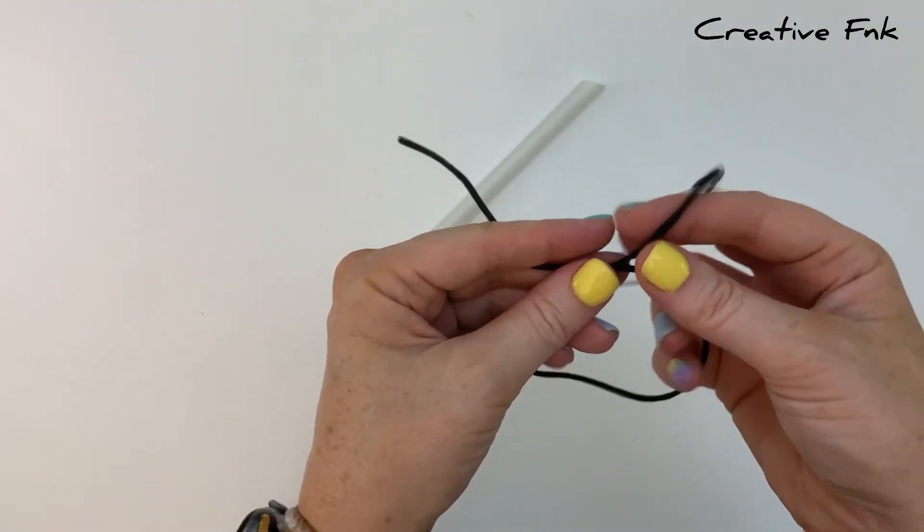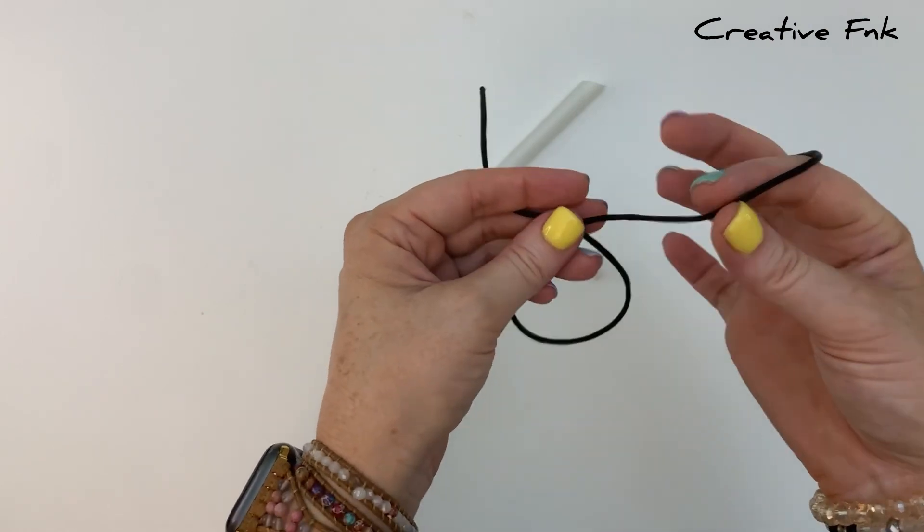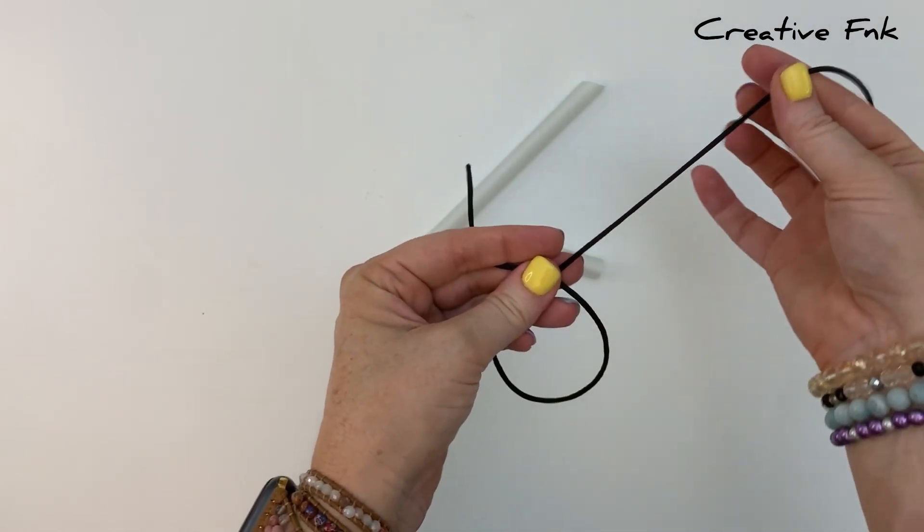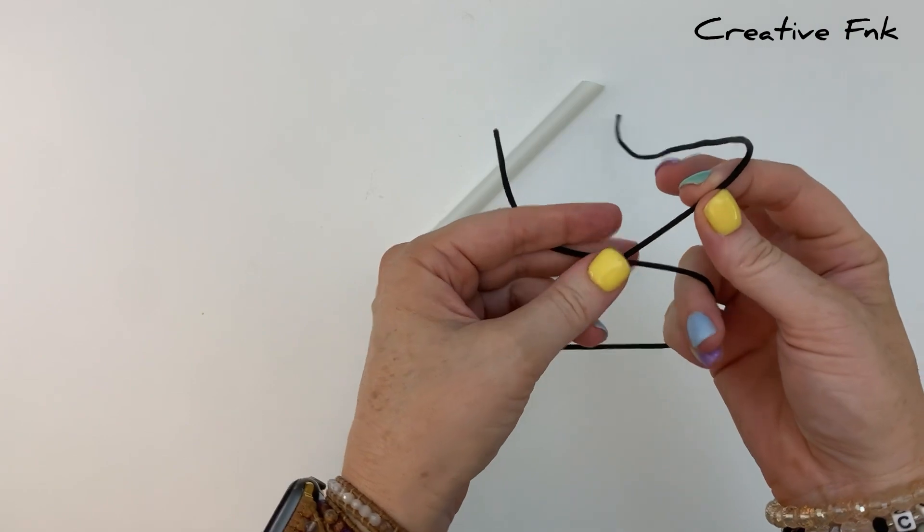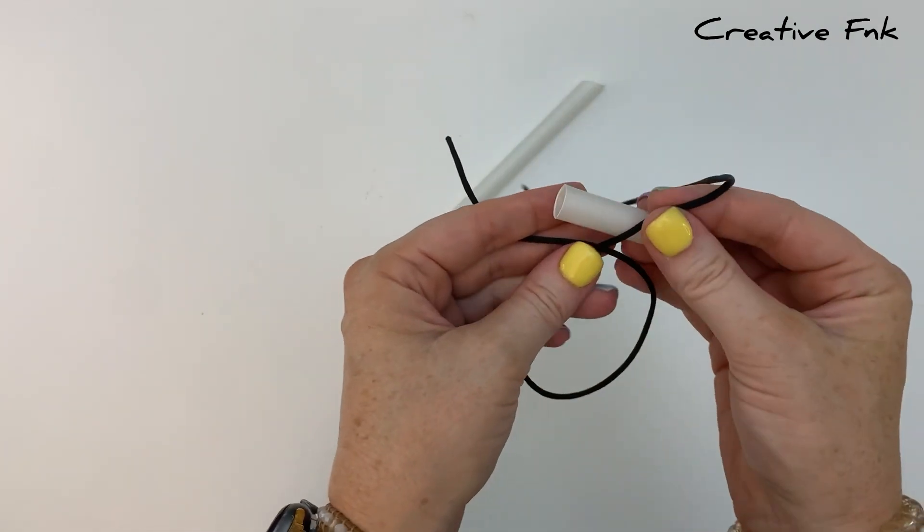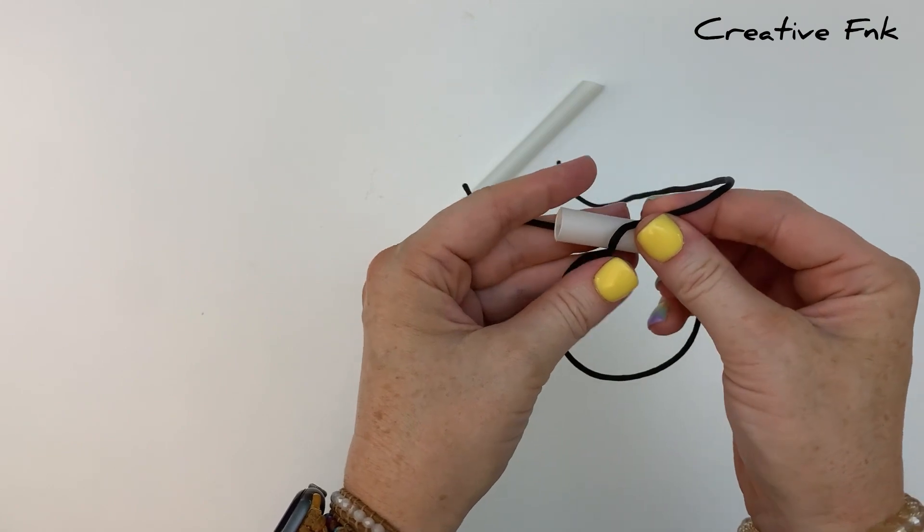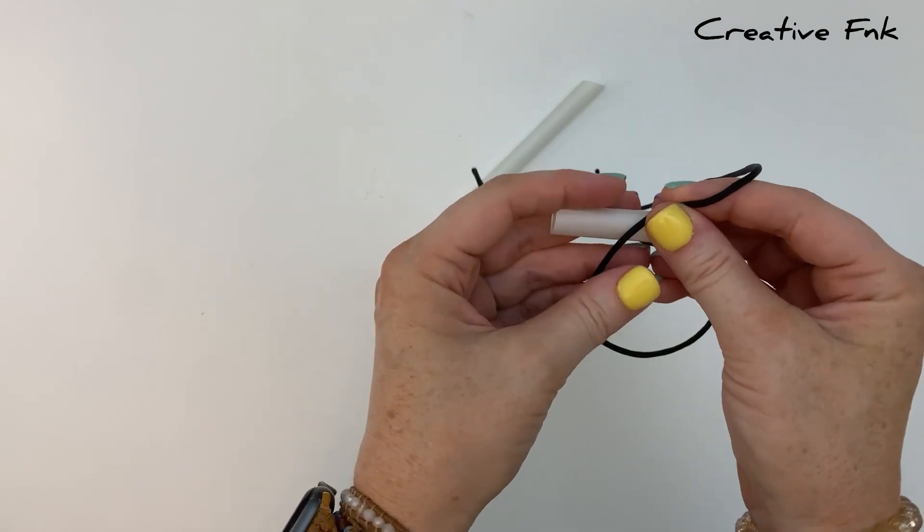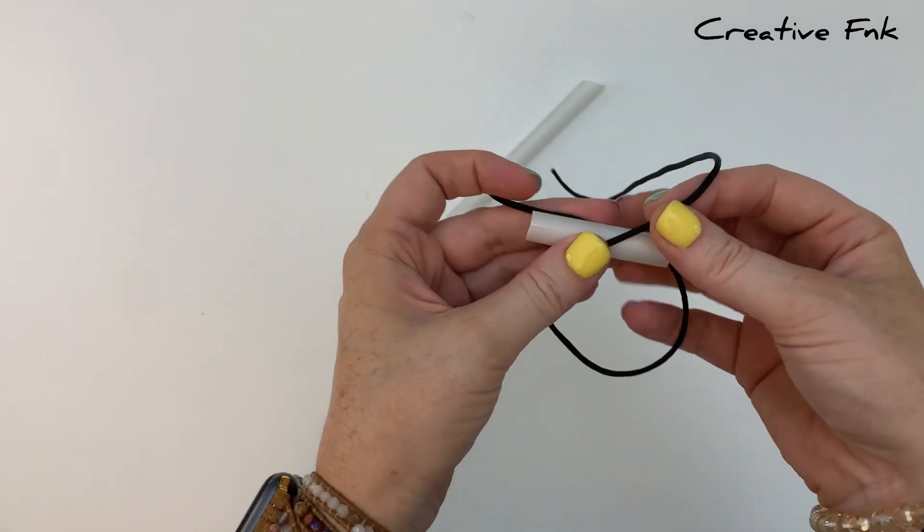Now we start by holding our cords so that they overlap here and the left hand cord is overlapping the right. Making sure you've got a little bit of length on this top cord as well. Then we place our little piece of tubing parallel with the cord underneath, just holding it gently in place there.